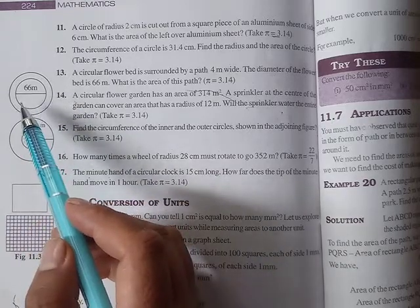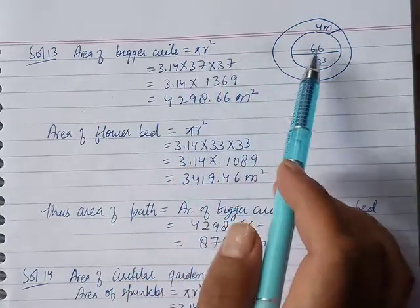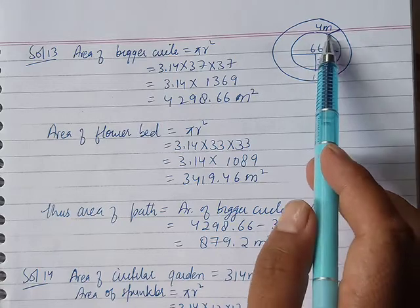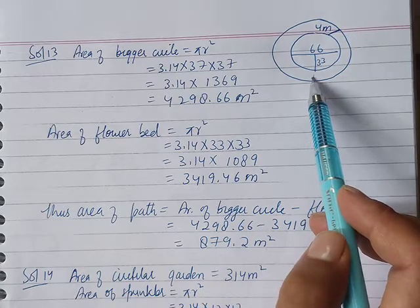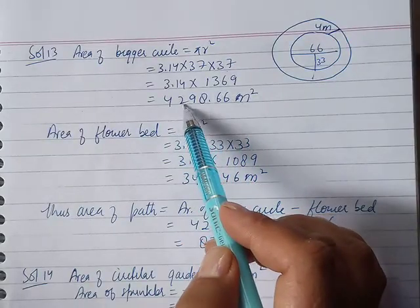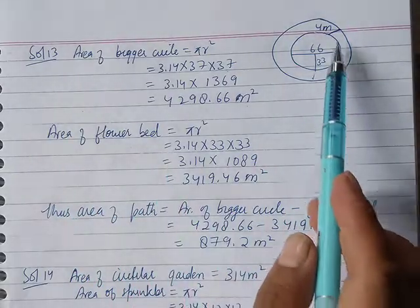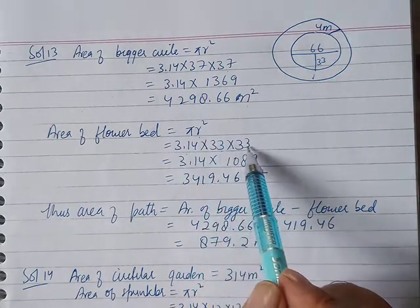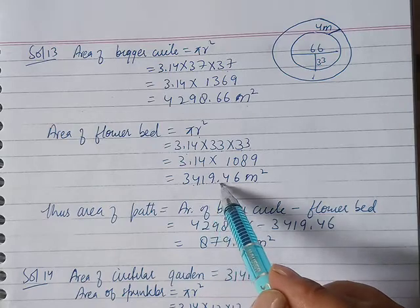Then we give the area of the bigger circle. The area of the bigger circle is pi r squared. The radius of the bigger circle is 37. Multiply, it's 4298.66 m². That's the area of the bigger circle. The smaller circle is the flower bed. That's the area of flower bed, pi r squared. Pi value is 33. Multiply, it's 3419.46 m².